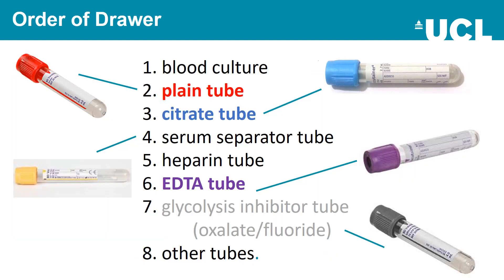It's important to draw blood in the correct order. The order is: blood culture bottles first, plain tube in red, citrate in blue, SST or serum separator tube which is yellow or gold, heparin tube which tends to have a green top, EDTA tube which is purple, glycolysis inhibitor or oxalate/fluoride tube which is grey, then any other tubes — though it's unlikely you'll use many others apart from these in day-to-day clinical practice.